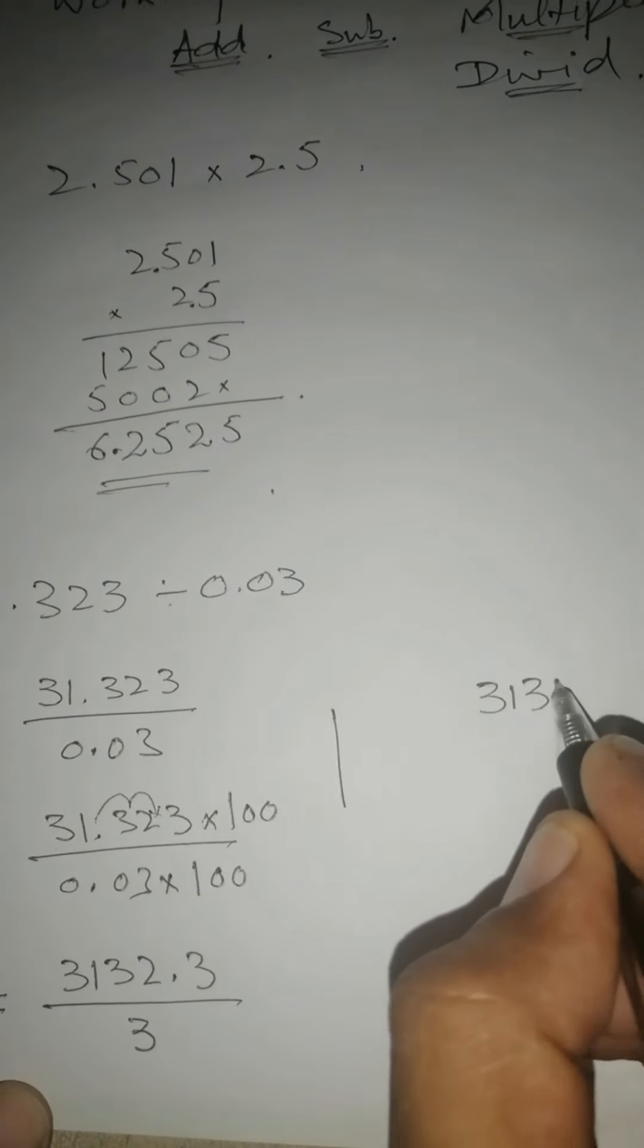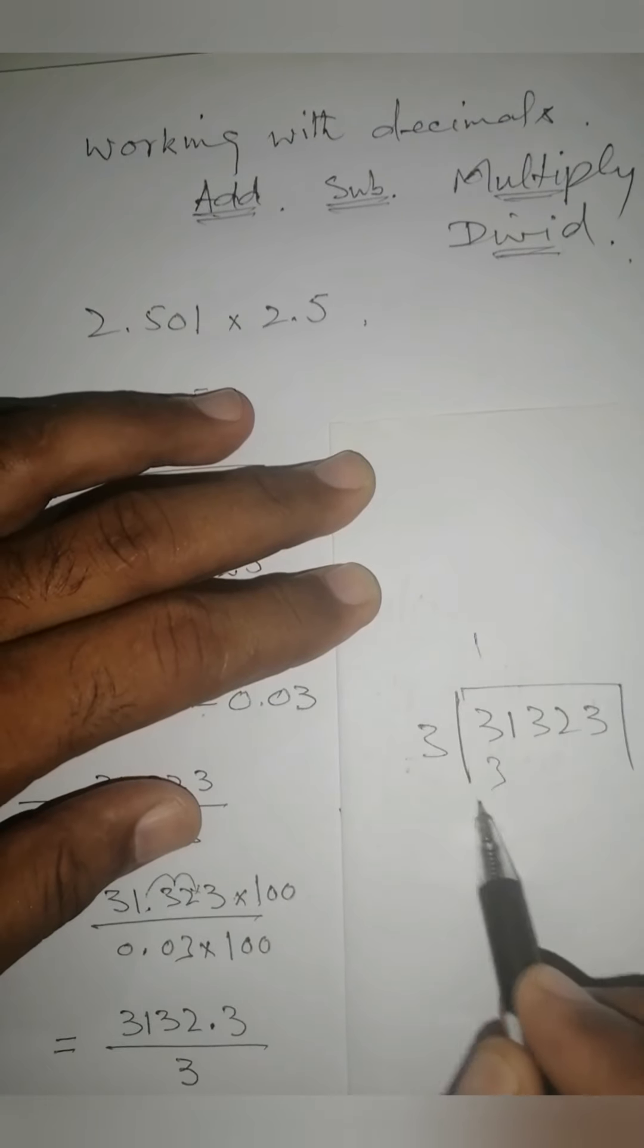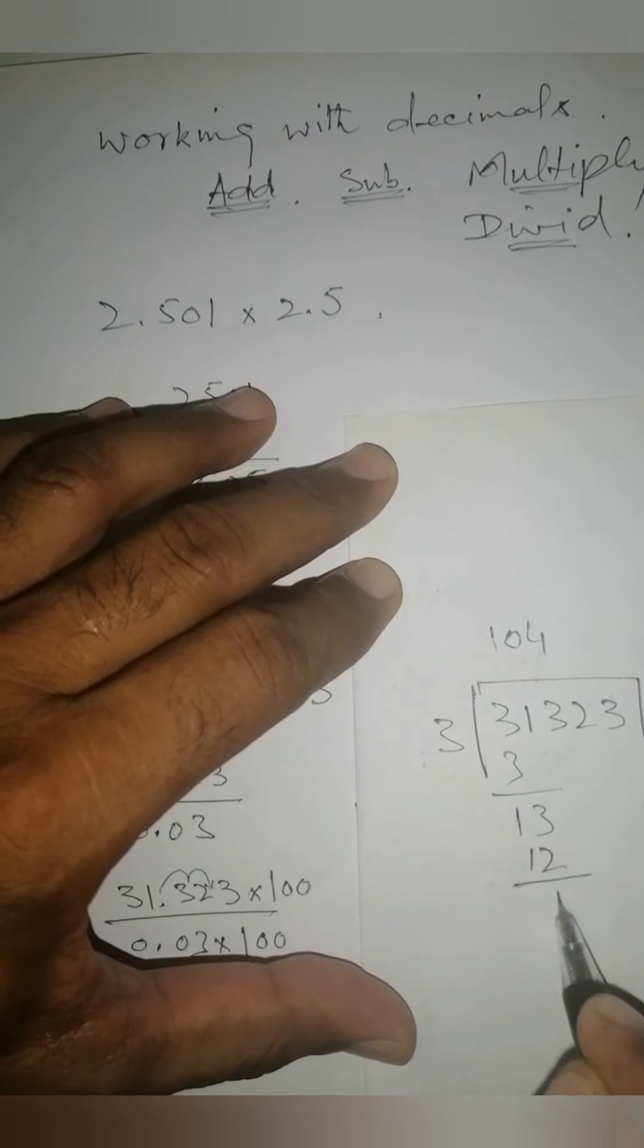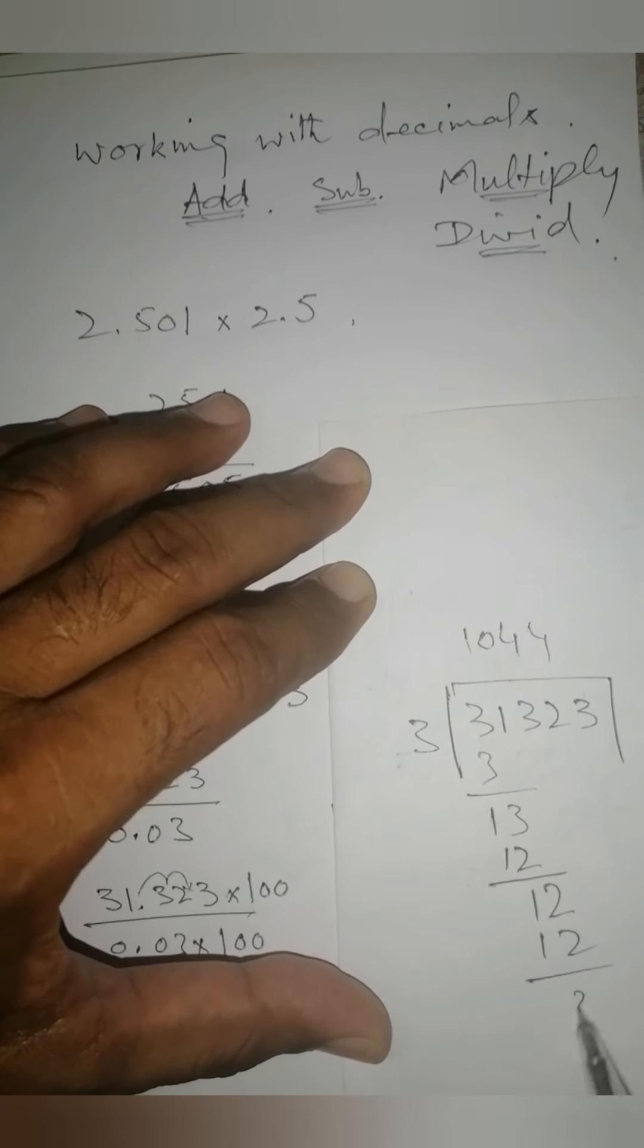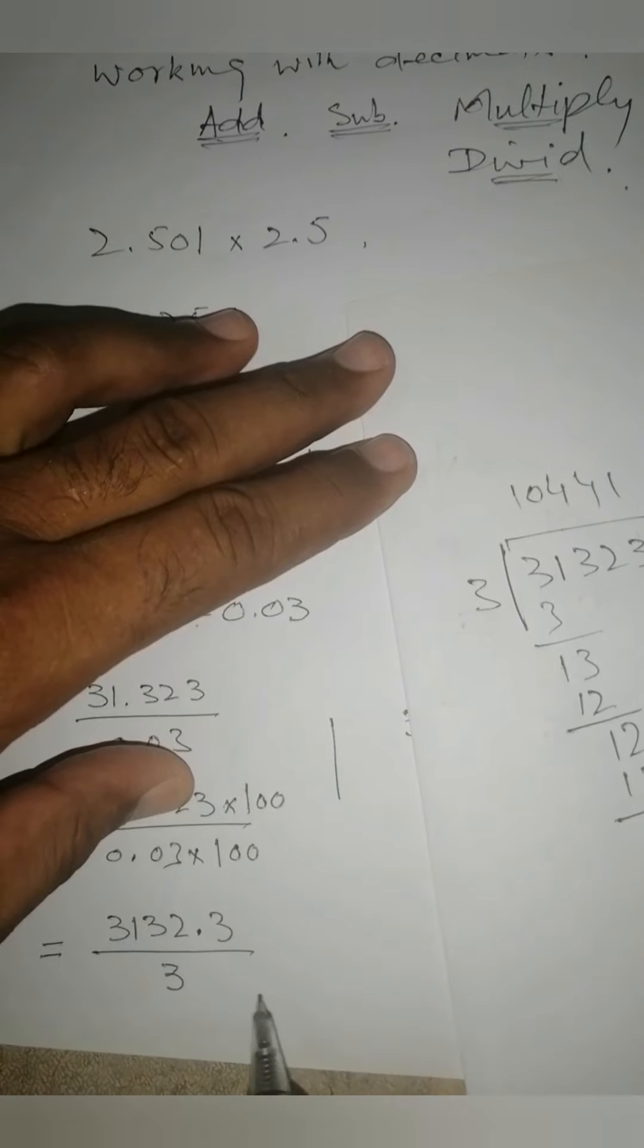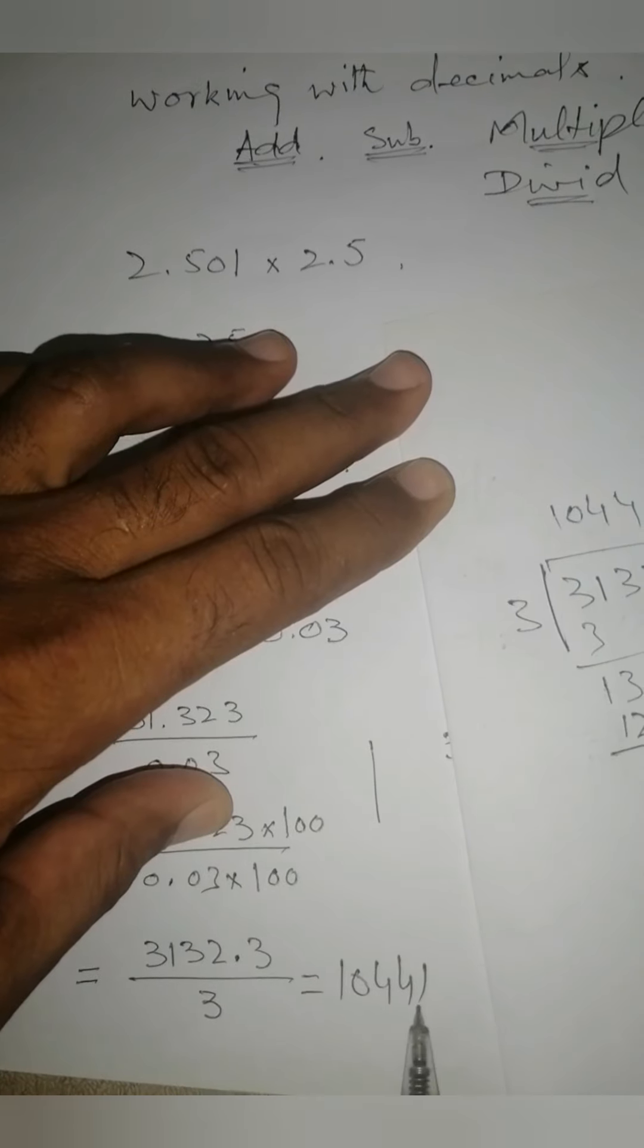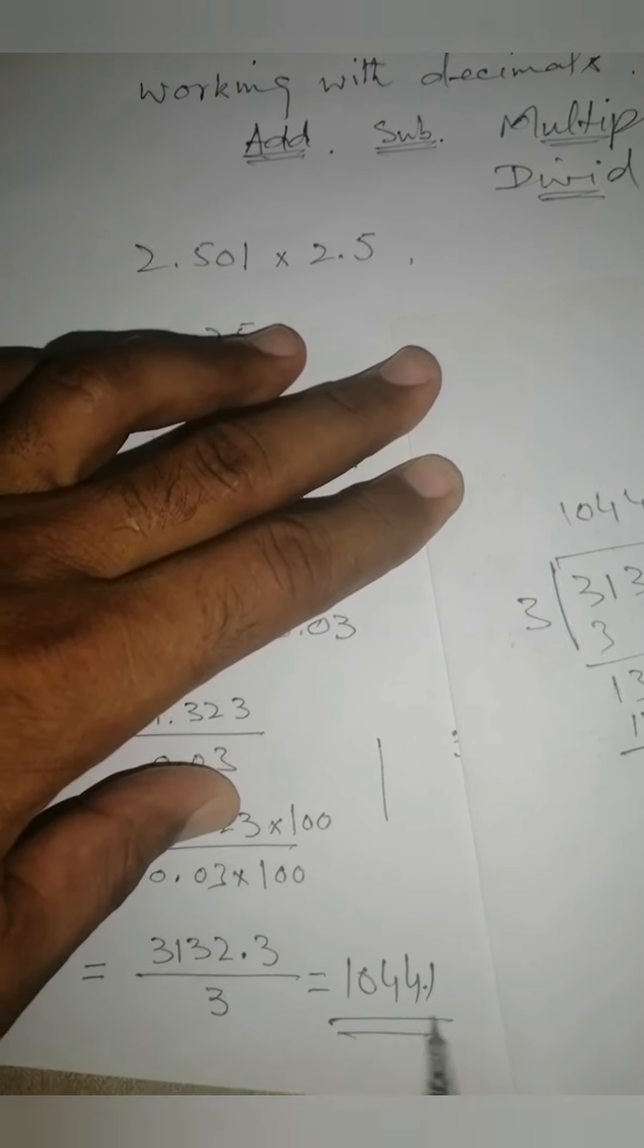Now do its division. Divided by 3. Start. Then 13. 3 fours are 12, one remainder. Then 2 will come down. 3 fours are 12, and 3. Three times 1 is 3. We got it. One zero. We got the answer: 1044. Now in this, we had ignored: after one digit there was a decimal. So in the answer again, after one digit put the decimal. This is our answer: 1044.1 is the final answer.